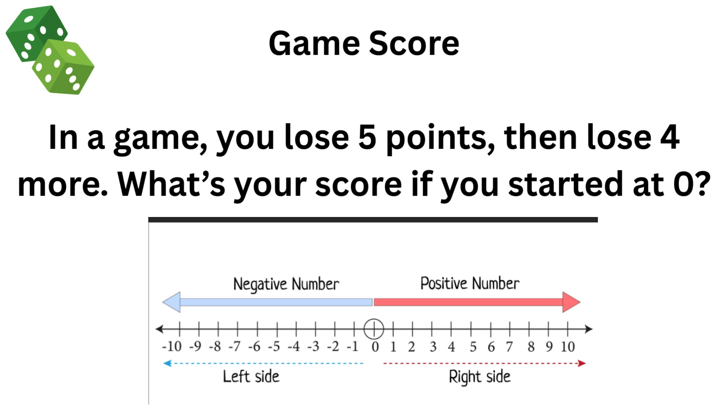Some slightly longer questions now. Game score. In a game, you lose five points, then you lose four more. What's your score if you started at zero? We can use the number line to help us. We'll start at zero. So we lose five points, so we need to count backwards from zero. We'll go from zero, minus one, minus two, minus three, minus four, minus five. And then we lose four more points, so we need to count back four more. So we go minus six, minus seven, minus eight, minus nine. So our score, if we started at zero and we lose five points and then another four points, would be minus nine.